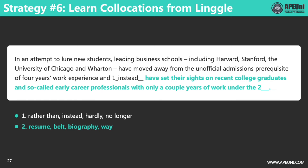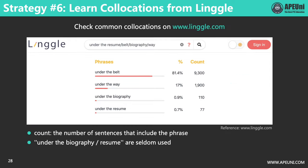Our last strategy is to learn collocations from Linggle — a super helpful website with a huge collection of sentences from different sources. In the second blank, all four options are nouns. When used together with the preposition 'under' — under the resume, under the belt, under the biography, under the way — they all seem to be correct, but obviously there is only one correct answer. Open Linggle at www.linggle.com. Type 'under the resume/belt/biography/way' in the input box, then press enter, and you will get the results shown on this slide.